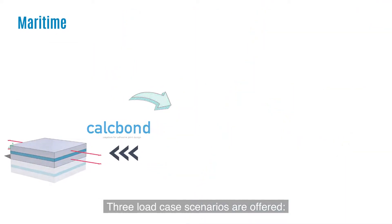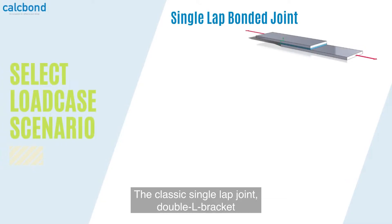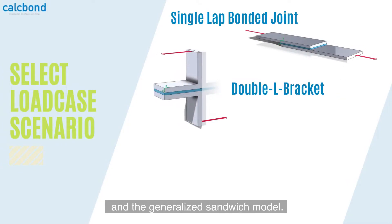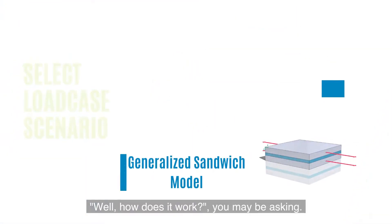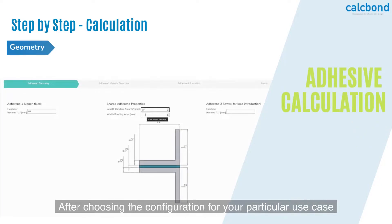Three load case scenarios are offered: the classic single lap joint, double L bracket, and the generalized sandwich model. How does it work, you may be asking? Let's walk through the procedure step by step.